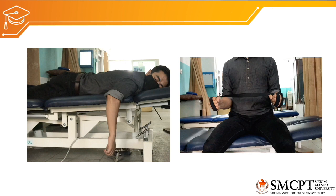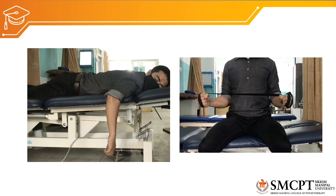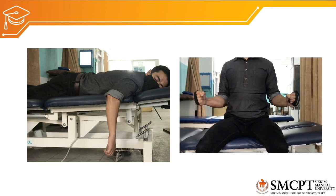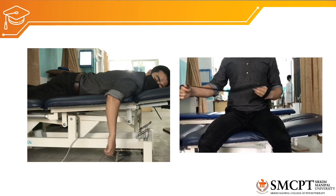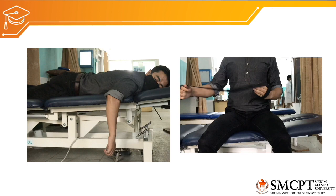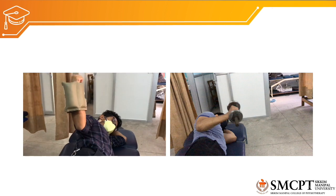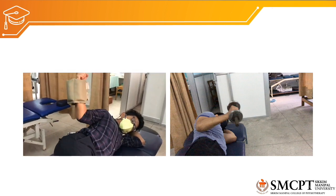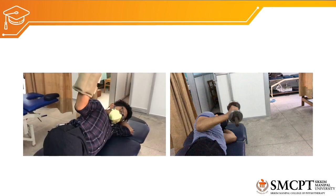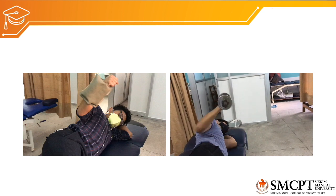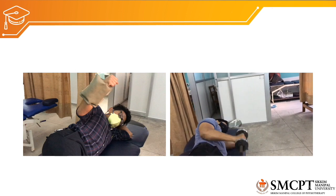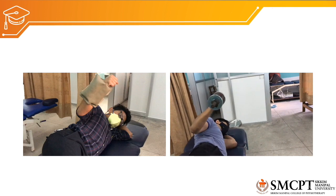If strength reaches grade 3 plus — where the patient can take some minimal resistance — we start progressive resistance exercises. The patient sits with a theraband fixed bilaterally, shoulder in adduction, and performs external rotation. A weight cuff can also be used in side lying so gravity acts against the movement, or dumbbells can be used. The repetition scheme remains constant at 10 repetitions in 3 sets.